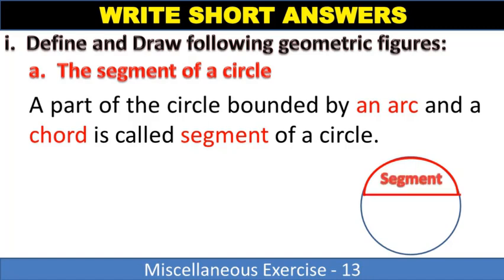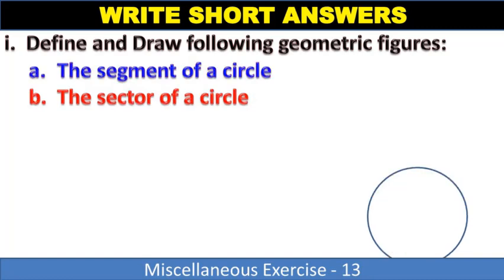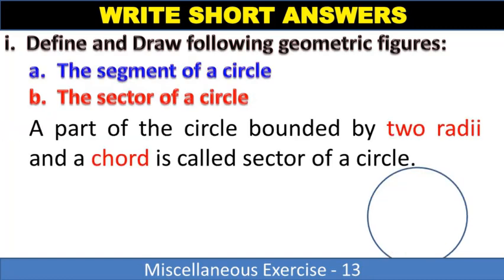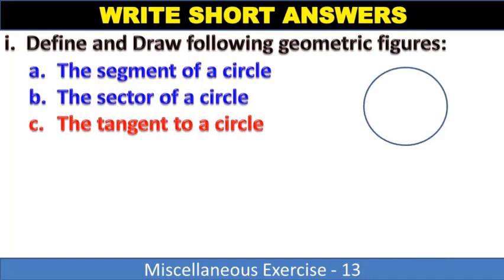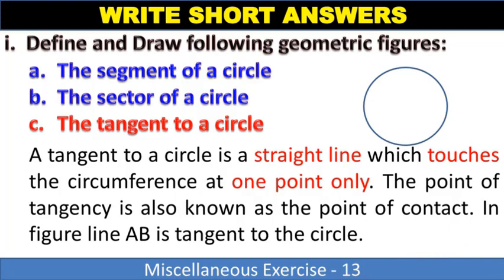Part B is the sector of a circle. A part of the circle bounded by two radii and chord is called sector of a circle. I remembered it this way: sector ends with 'r', so it has two radii on both sides.